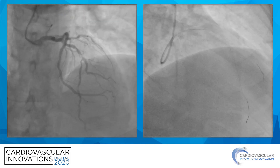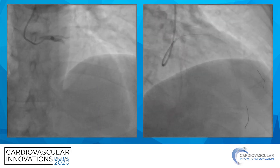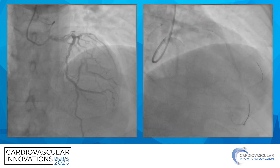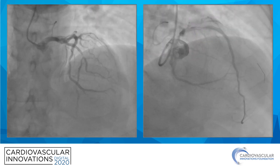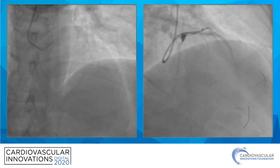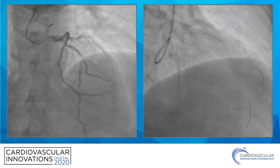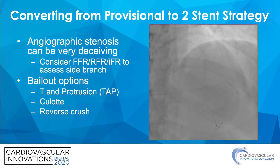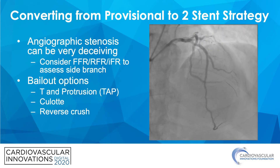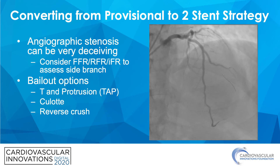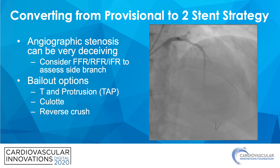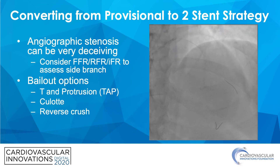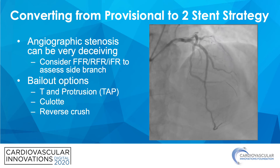This next case is a patient who presented with an anterior infarct and had a high-grade Medina 1,1,0 lesion involving the LAD and the diagonal branch. Because of the lack of disease at the origin of the side branch, a provisional approach was taken. We left a wire in the side branch to maintain access, and after stenting the main vessel, we lost all flow into the diagonal branch. We were able to wire back through and open this up by stenting the side branch. Angiographic stenosis in a stented side branch can be very deceiving, and it's important to consider FFR, RFR, or IFR to assess the degree of stenosis. It's important to be comfortable with bailout options in case of side branch loss, including T&P protrusion, coulotte, or potentially a reverse crush technique.